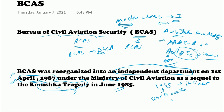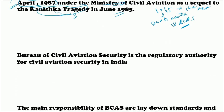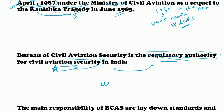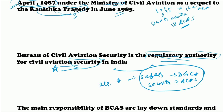BCAS is basically the regulatory authority of civil aviation security in India — 'civil aviation security' is the important key term here. This is distinct from the regulatory authority for safety, which is the DGCA — the Directorate General of Civil Aviation. So to summarize: safety is DGCA, whereas security is BCAS.